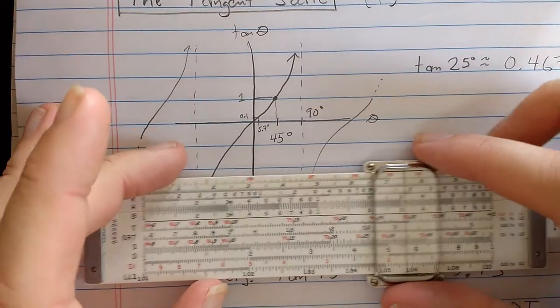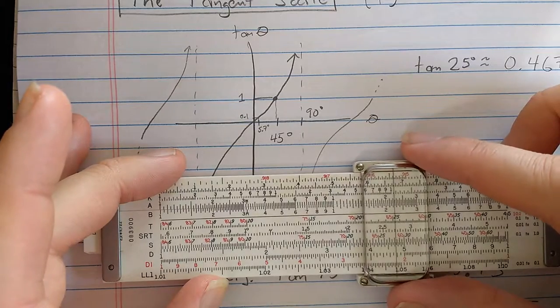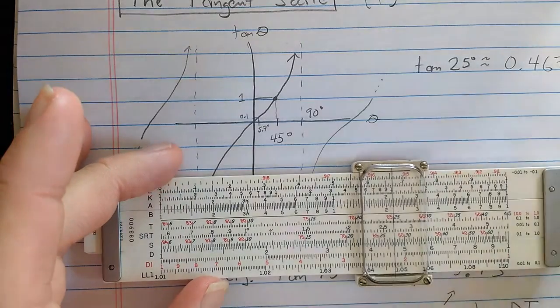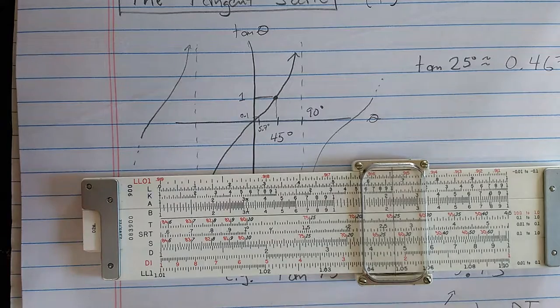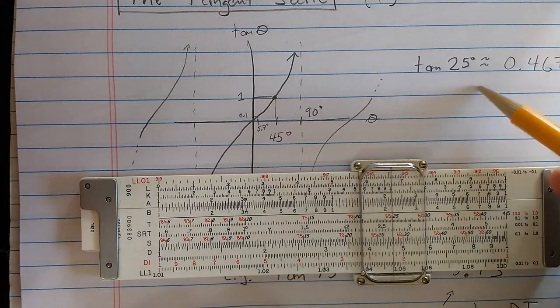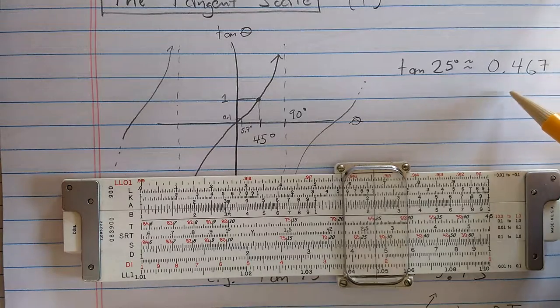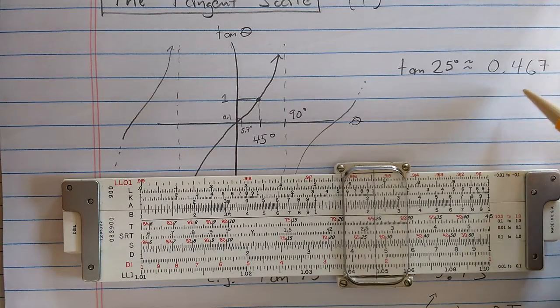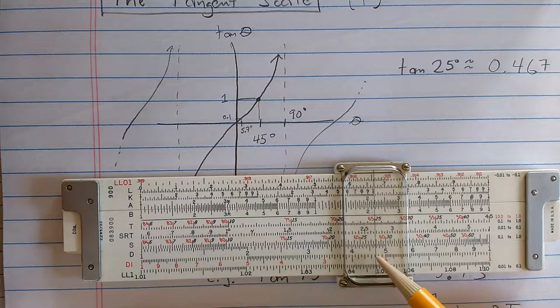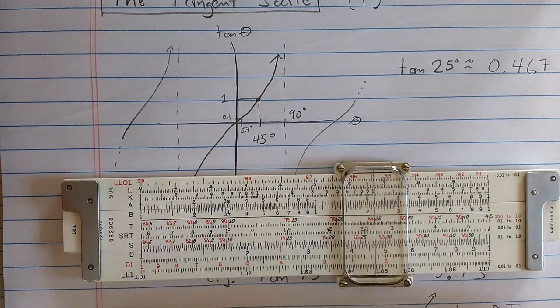So if I set 25 degrees on the T scale here, then what is on the D scale is tangent of 25 degrees if tangent is in the range 0.1 to 1. So here we see 0.467.